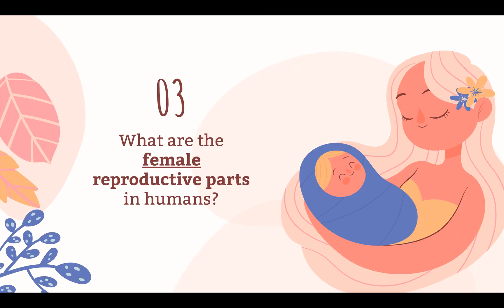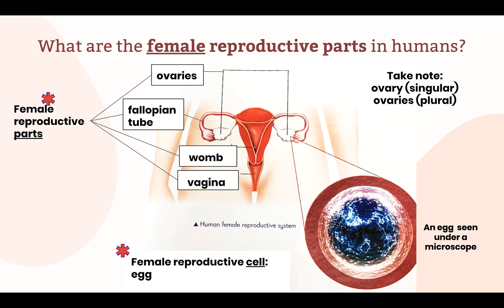Next, we have the female reproductive parts in humans. The female reproductive parts in the human body are the ovaries, fallopian tubes, womb, and vagina. These parts are located inside the body. Take note that the plural form, ovaries, is used in the diagram because the label points to two ovaries. In singular form, it is known as an ovary. The female reproductive cell that is produced in the body is called the egg.